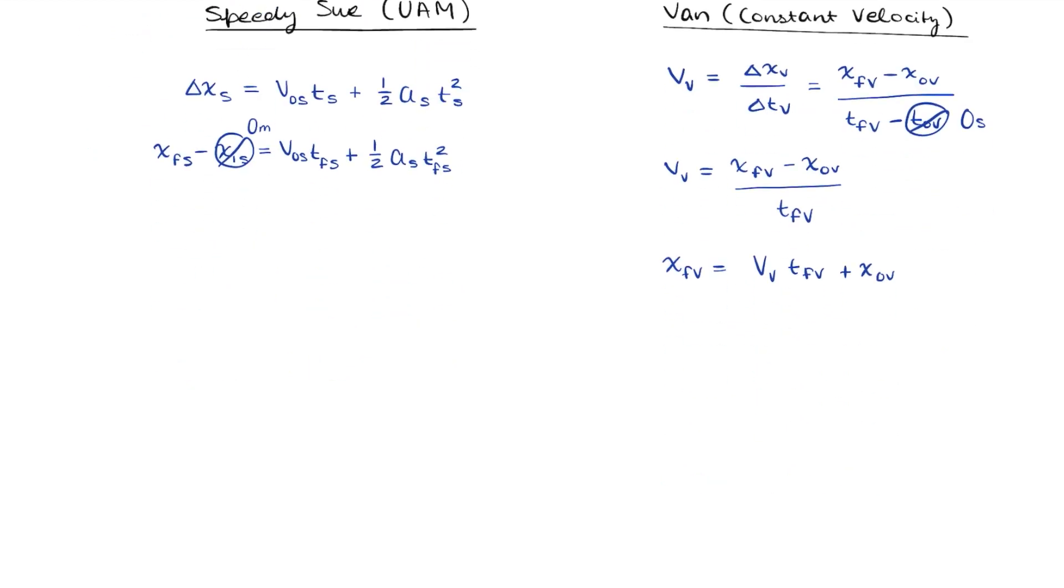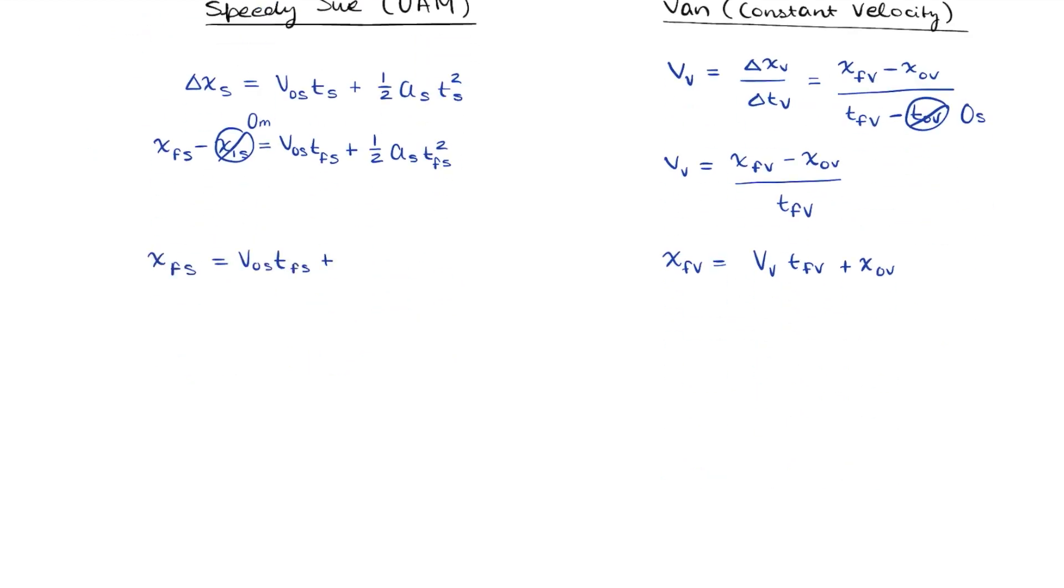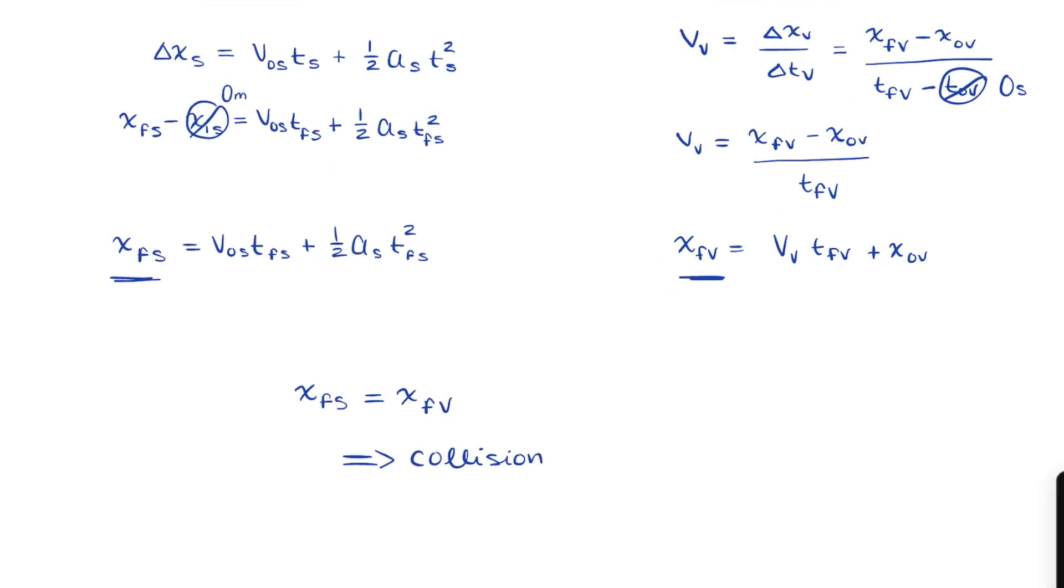If we rewrite the equation for Speedy Sue, you can see that both of these equations have been solved for the position final of both the vehicles. And we also know that if the two vehicles were to collide, that means their final positions would be the same. Similarly, their final times would be the same as well because that would be the time of collision for both.